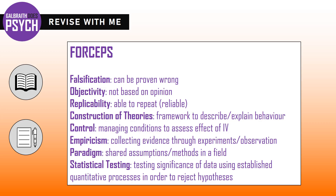So your features of science — you should know most of these. Falsification, or falsifiability, refers to the idea that a hypothesis or a theory can be proven wrong. It doesn't create a circular argument. It's something that I could actually set up a study, test it and prove it wrong. It needs to be testable.